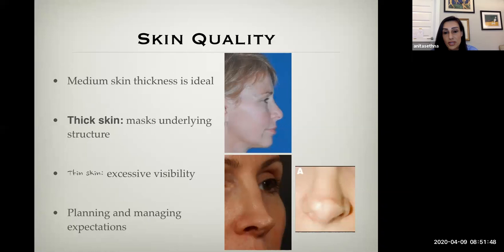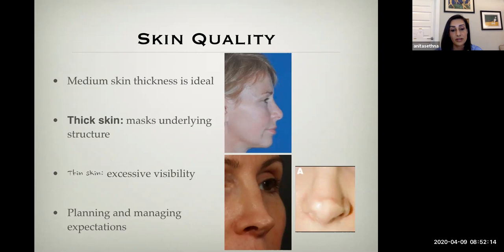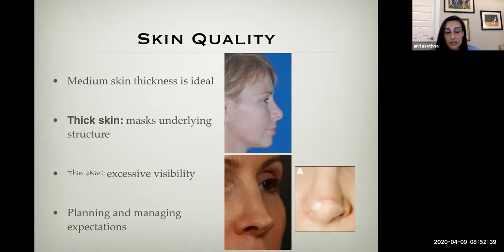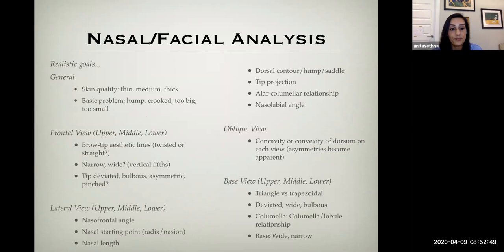Thick skin I like to equate to a quilt. When a patient wants certain things achieved and they have particularly thick skin, I liken it to building a structure and putting a quilt over it — it makes it much harder to see what we're trying to see, versus a sheet where you can see all the outlines. You must plan for this and manage patient expectations: in a thin-skinned person, irregularities can come up; in a thick-skinned person, recovery can take 18 months to two years.